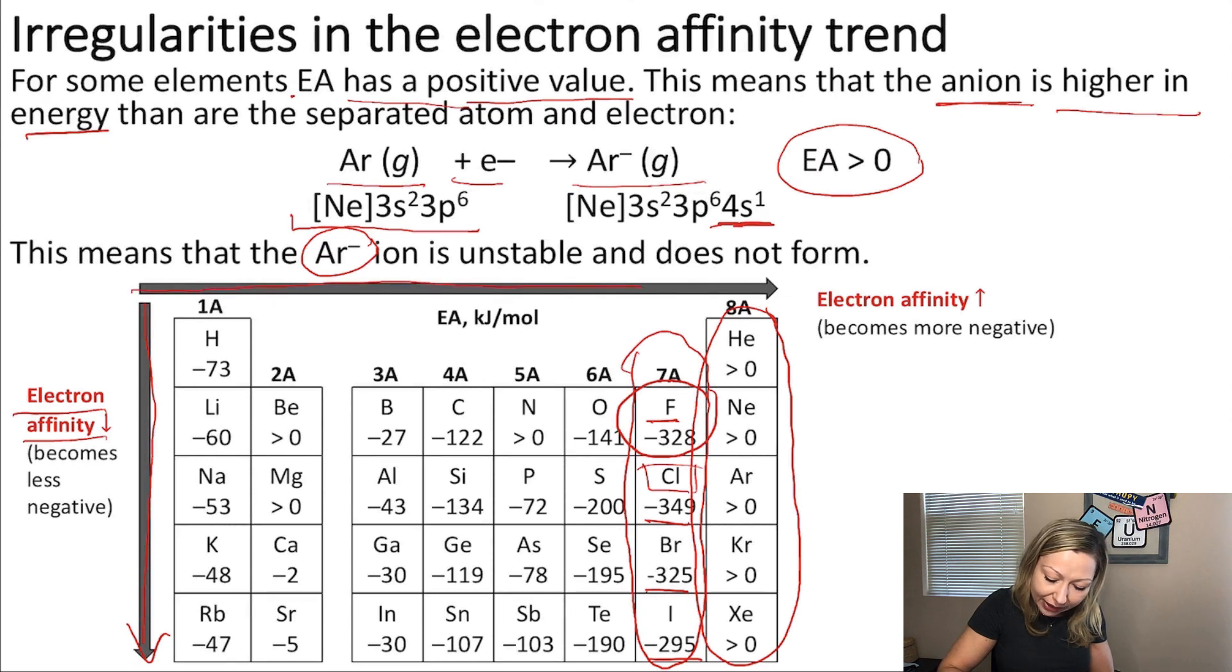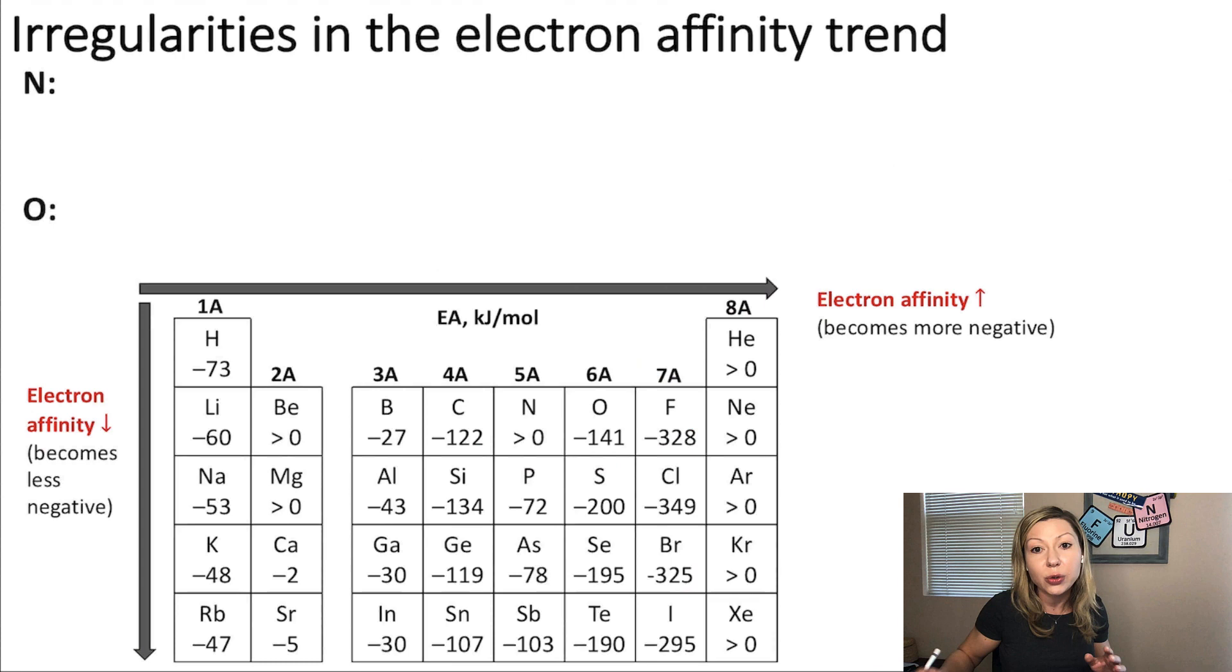When we go left to right across the period, we know that electron affinity should become more negative. And it generally happens. Just look at boron, carbon, and oxygen. But nitrogen here is a little bit weird. What is going on? Why does it have a higher-than-zero electron affinity? Well, let's take a look at the electron configuration.